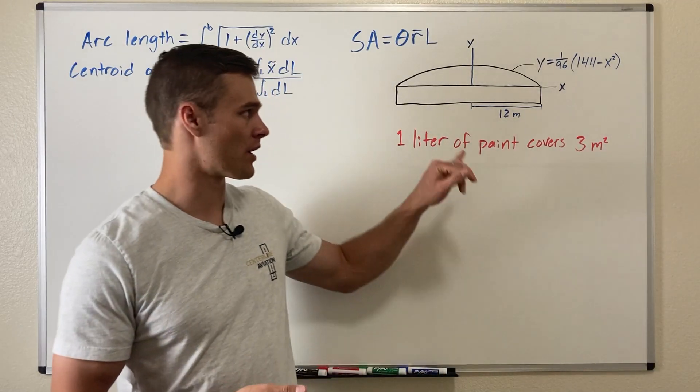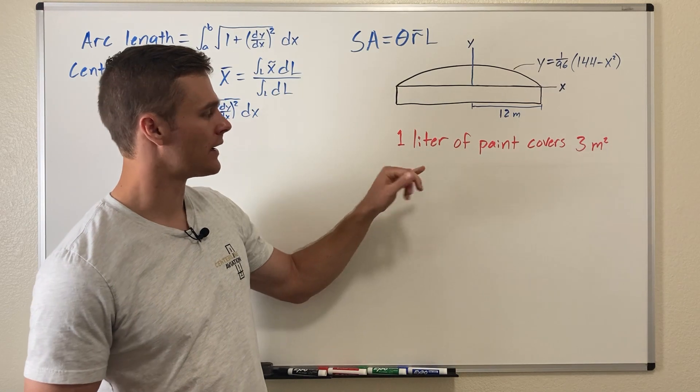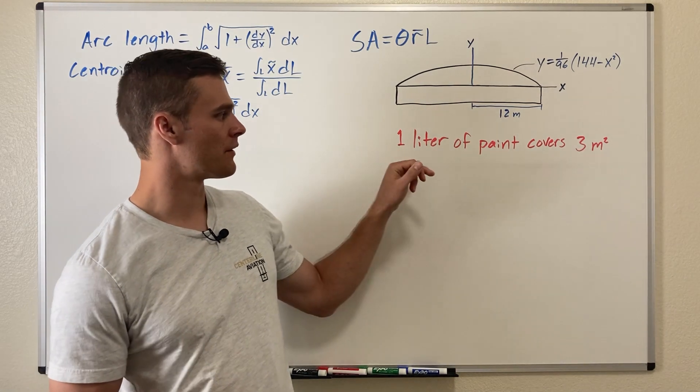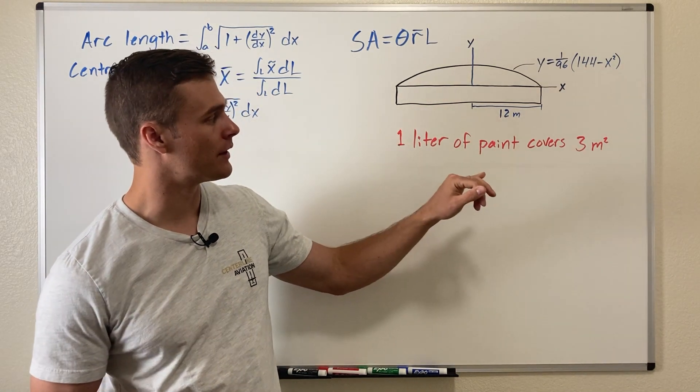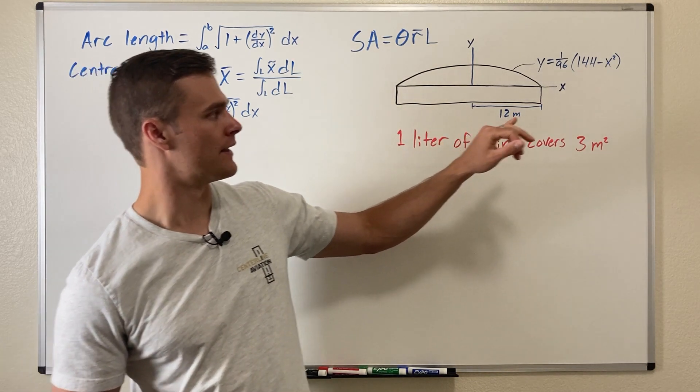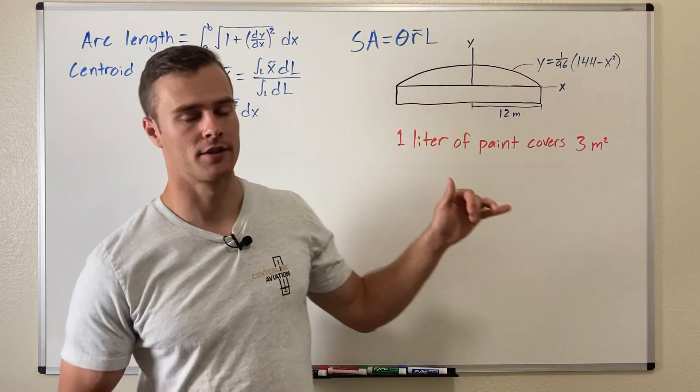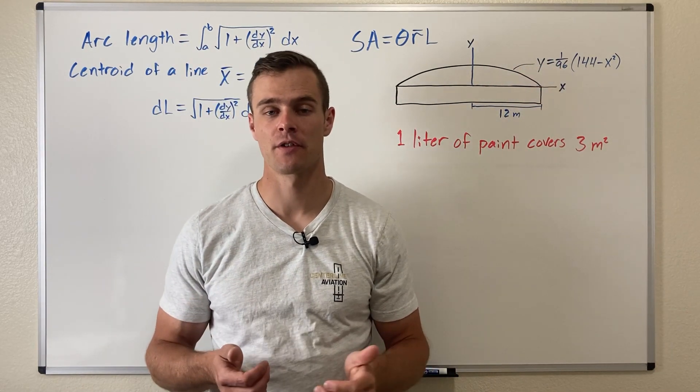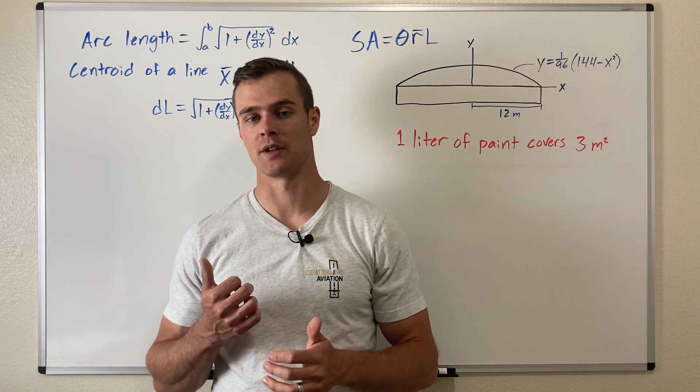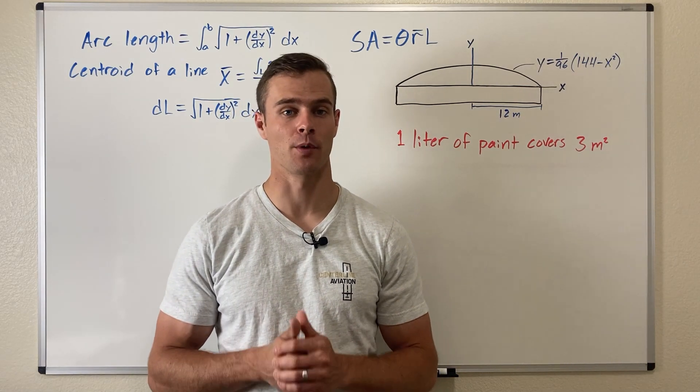So what we have here is a water tank with a parabolic roof and what we need to do is paint it. One liter of paint covers three square meters of surface area and this roof is modeled by this equation—it's a parabola. So we need to find the surface area of that to be able to find how much paint we will need to paint it.